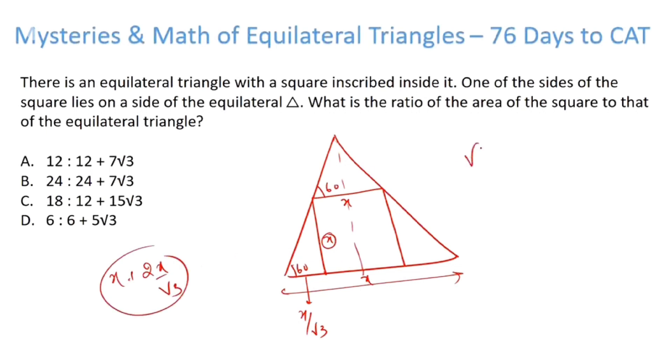And therefore the area will become root 3 by 4 into the square of X plus 2X upon root 3. And what's the area of the square? Area of the square is X square. So now we just have to take a ratio here.